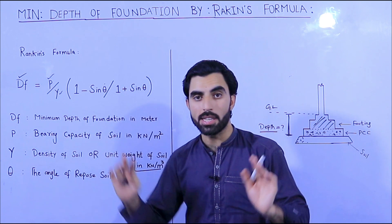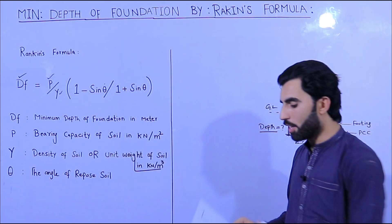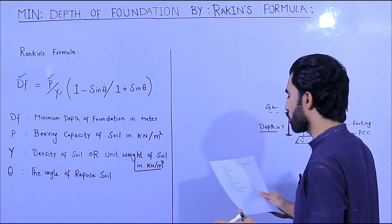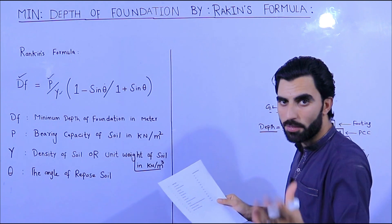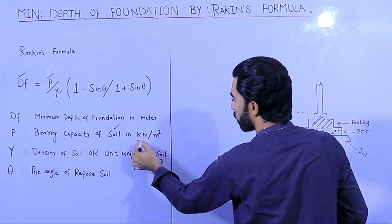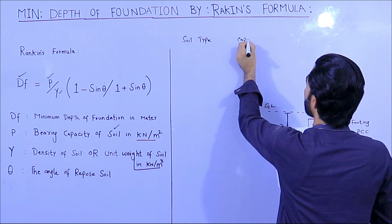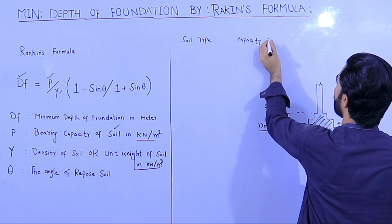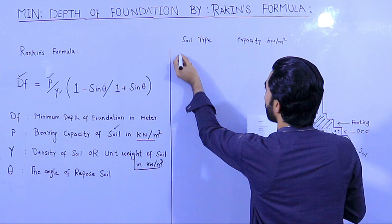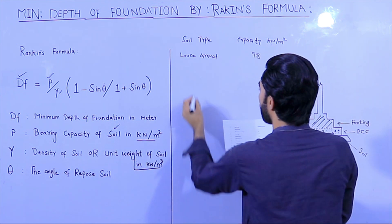With this formula you can find the minimum depth of foundation. I have here different bearing capacities for different types of soil. The soil type and its bearing capacity in kilonewton per meter square are as follows: for loose gravel soil, that is 98 kilonewton per meter square. For fine sand or loose and dry sand, that is also 98 kilonewton per meter square.